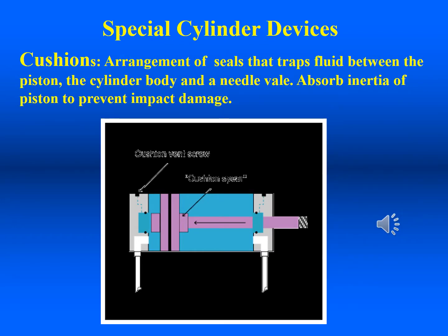Cushions are devices that trap fluid between the piston and the body caps to decelerate the piston and prevent impact damage, as well as inertia forces that may affect machine operation. In many cases, the cushions can be adjusted to obtain the desired amount of cushion, or they may be adjusted to eliminate cushion altogether. Cushions are found in both hydraulic and pneumatic cylinders. They are more necessary in compressed air systems because the actuators tend to move faster than they do in hydraulic systems.